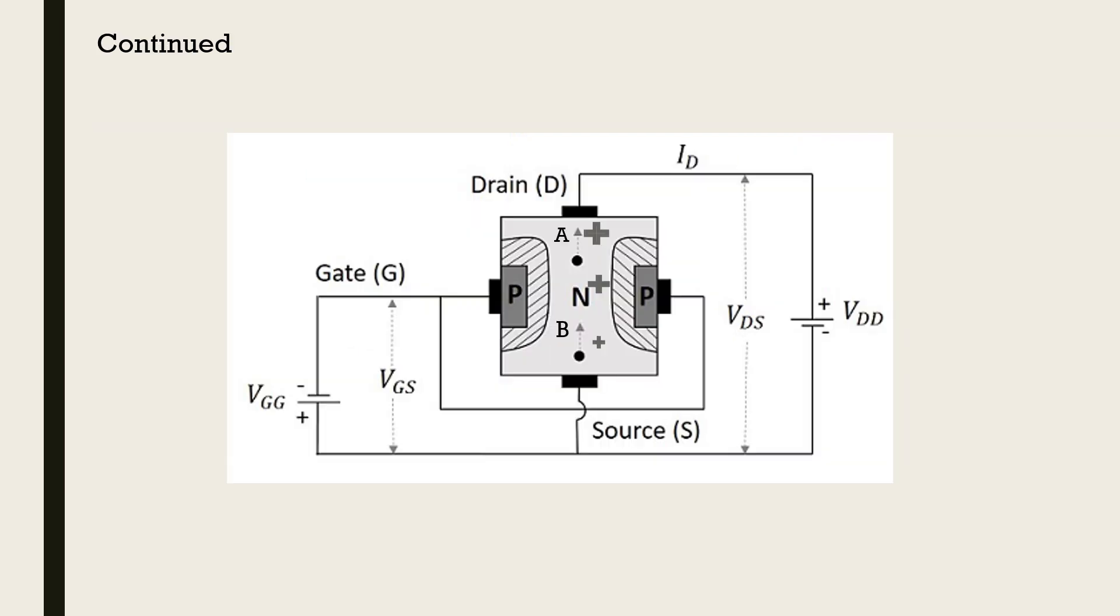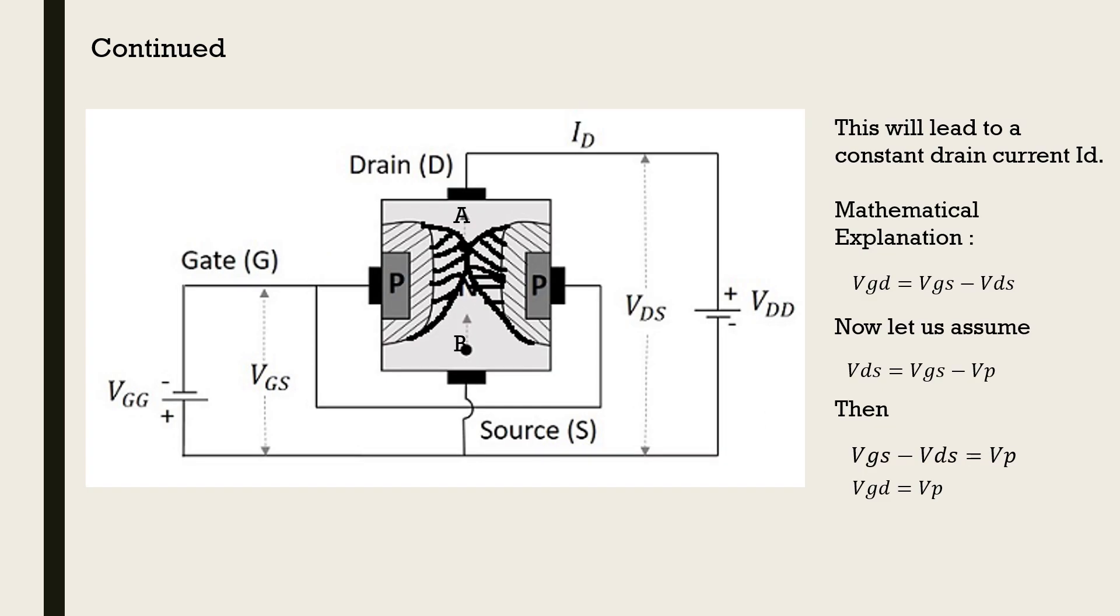Now, when the current starts flowing and voltage VDS is in effect across the channel, we can expect the accumulation of positive charges as shown in the figure. The region near to the drain will have a larger positive charge than the region near the source. Thus, point A is more positive than point B. This also means that the depletion layer will have a different shape as shown. Let us assume VDS to follow the equation VDS is equal to VGS minus VP. From Kirchhoff's voltage law, we know that VGD at point A is equal to VGS minus VDS. Then from these two equations, we get VGS minus VDS is equal to VGS minus VP.